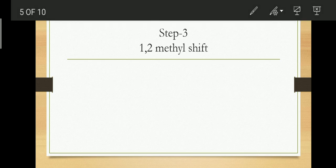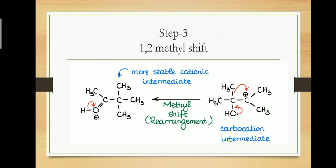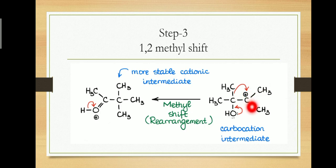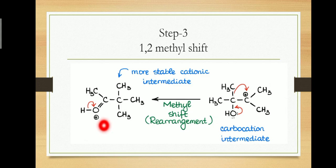During the rearrangement, the methyl group from the first carbon shifts to the second carbon — this is the 1,2 methyl shift. As it migrates, it takes its bonding pair of electrons with it. This results in the formation of the oxonium ion, which carries a positive charge on the oxygen.